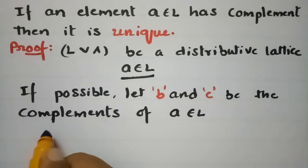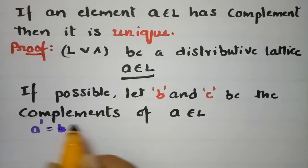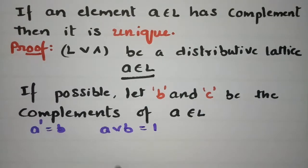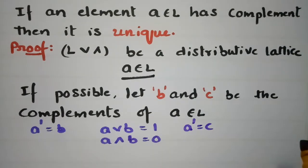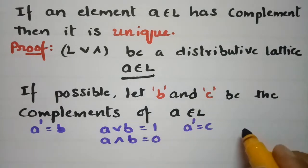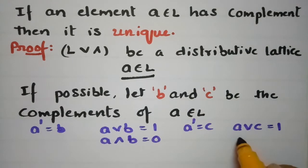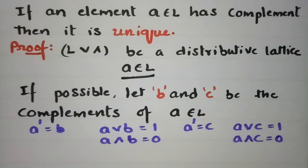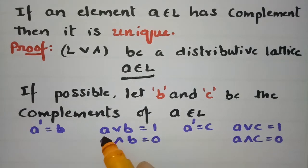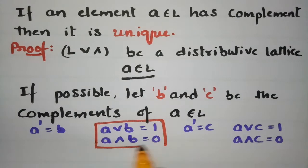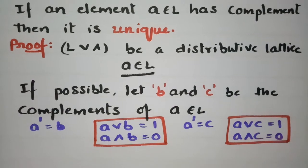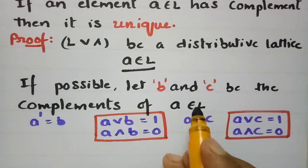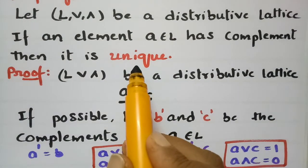If the complement of A equals B, then A join B equals the greatest element 1 and A meet B equals the least element 0. If the complement of A also equals C, then A join C equals 1 and A meet C equals 0. These are the conditions when A has complements B and C. We must use these properties to prove that the complement of a distributive lattice is unique.